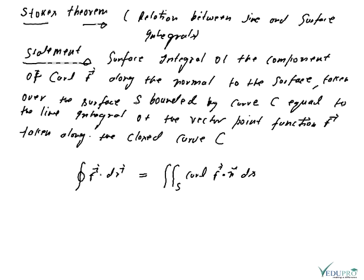Where ds has been discussed. ds is given by: for example if we have the xy plane, the value of ds should be dx dy divided by |n̂·k̂|. We have discussed this before. If the plane is xy plane then for yz plane it will be dy dz, and the unit vector perpendicular to yz plane will be î (along x-axis).